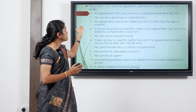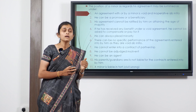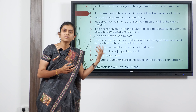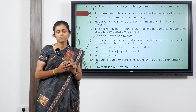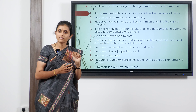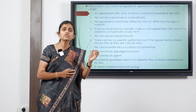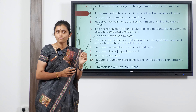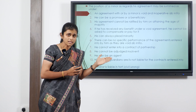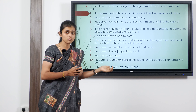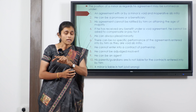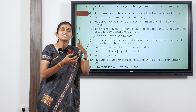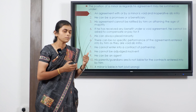Second, a minor can be a promisee or a beneficiary — he can receive benefits. For example, if Mr. X, a minor, enters into an agreement with Mr. Y to purchase a bicycle for 500 rupees, Mr. Y cannot refuse performance on the ground of X being a minor. X can be a beneficiary; if X wants to perform his promise he can, but Y is still entitled to perform his promise irrespective of X's promise, because it is X who has the benefit of claiming minority.